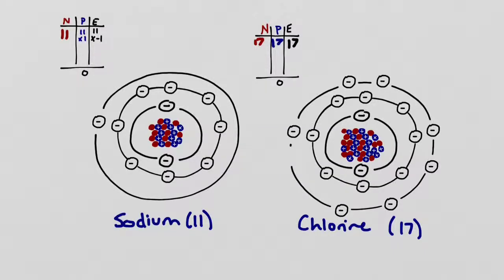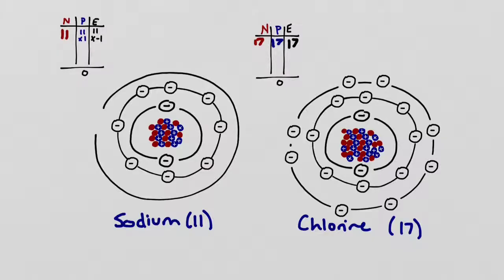The chlorine atom also currently has an empty space in its outermost valence electron shell — just like sodium, it does not satisfy the octet rule. It's going to be much easier for chlorine to gain one electron to fill its outer shell than to lose seven electrons. That's why you often see sodium and chlorine bonded together — an electron is transferred from the sodium atom to the outermost shell of the chlorine atom, and now both atoms have a filled outer shell.